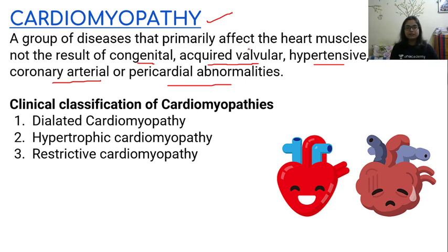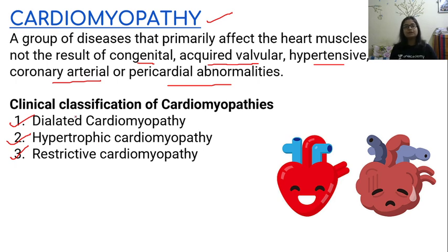Cardiomyopathies have been clinically classified as three main important types. The first one is Dilated Cardiomyopathy. The second one is Hypertrophic Cardiomyopathy. And the third one is Restrictive Cardiomyopathy. We are going to see these clinical types of Cardiomyopathy one by one — the exact mechanism, how it takes place, and what are the changes in blood circulation because of these cardiomyopathies in our body.